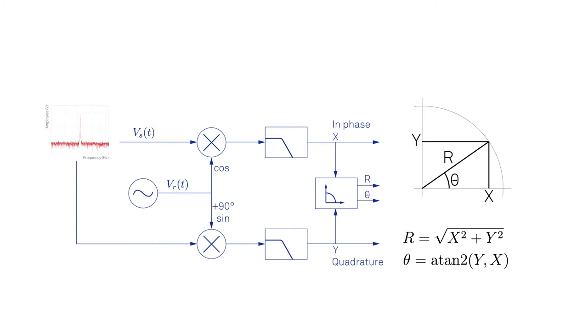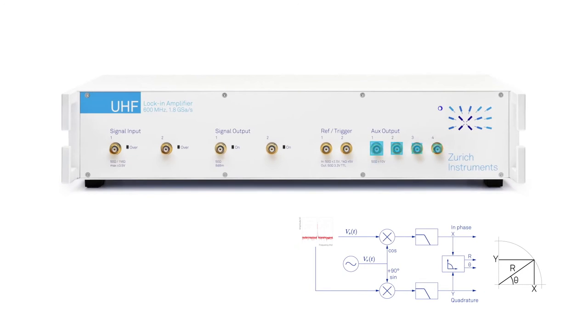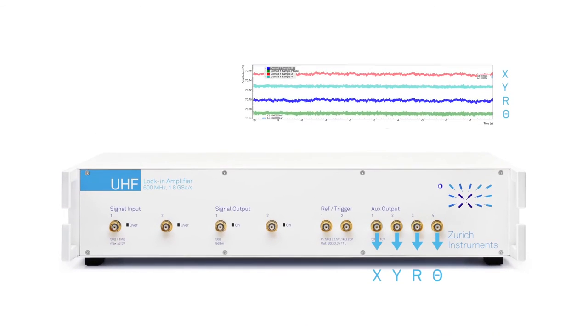Most locking amplifiers today are able to output x, y, r, and theta as analog signals with a scaling factor and offset, or as digital values to be stored and analyzed on a computer.